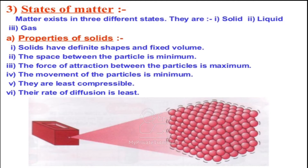So because of these reasons, the solids are least compressible and also the rate of diffusion is least. Because the forces acting between the particles are maximum, the kinetic energy of these particles is also minimum, and because kinetic energy is minimum, diffusion — that is, the intermixing quality — is also at its minimum. So this was about the properties of solid.